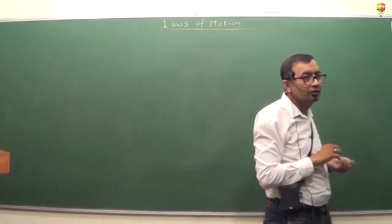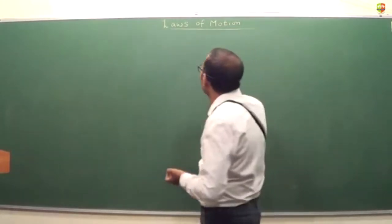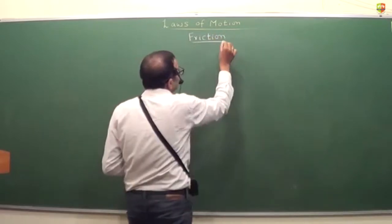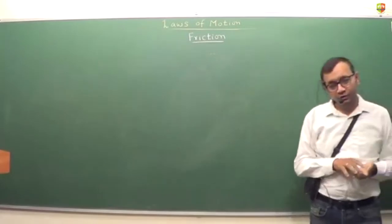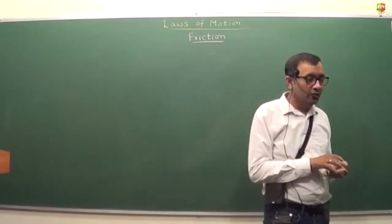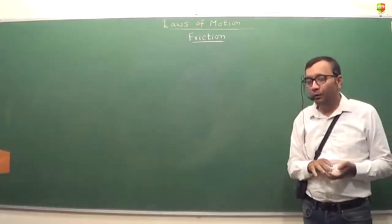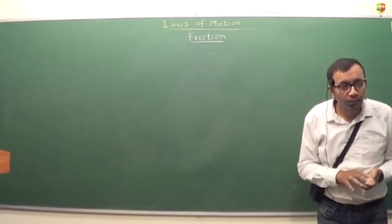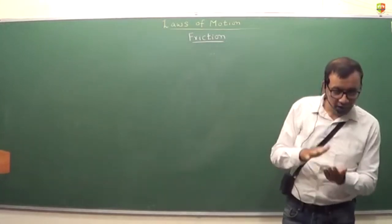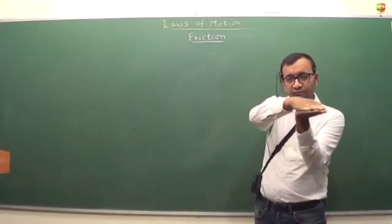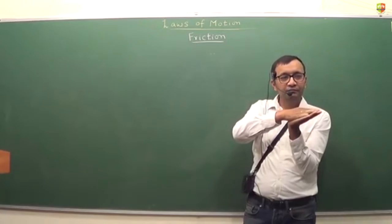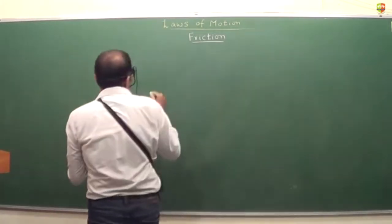The next force is friction. Write it down. Friction is a force tangent to the surface of contact. Friction tries to oppose relative motion between the two surfaces. If two surfaces are moving together with the same velocity, there is no friction. But if one surface tries to move with a different velocity than the other surface, there will be friction.